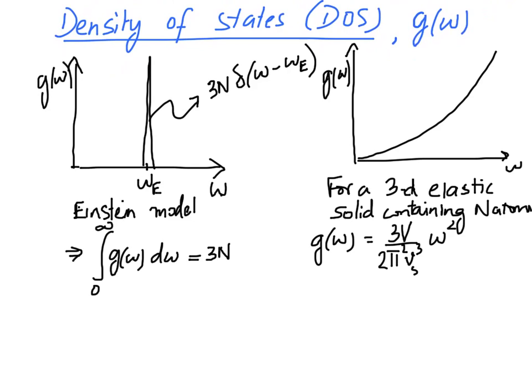Since we have N atoms in the solid, we should have a total of 3N degrees of freedom or modes of vibration. If we simply integrate this given G(ω) over all frequency we will get infinity, so we cannot integrate over all ω. We need to cut off the integration — we need to choose the upper limit at a specific value of ω such that the integral works out to be 3N.